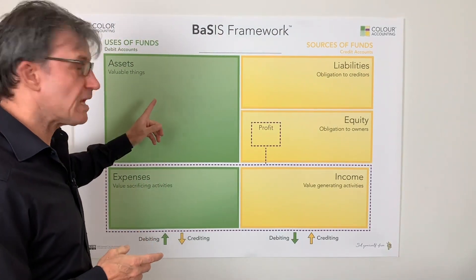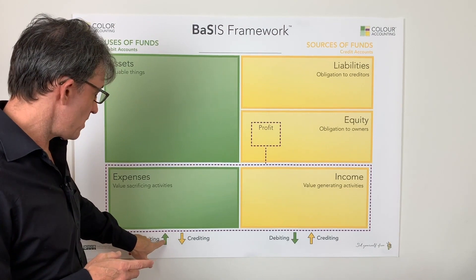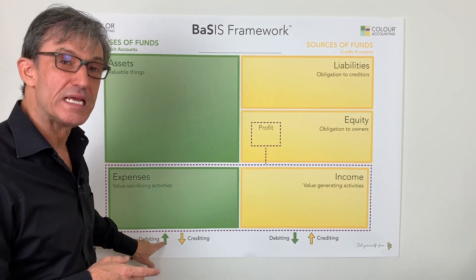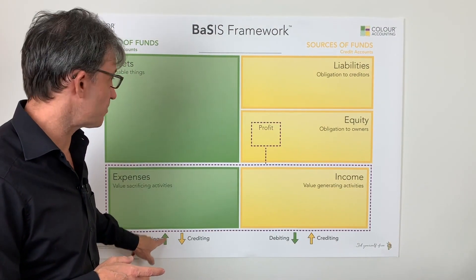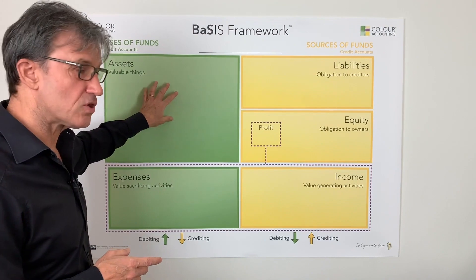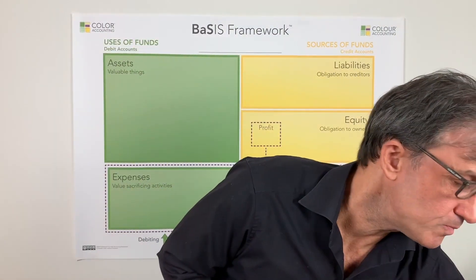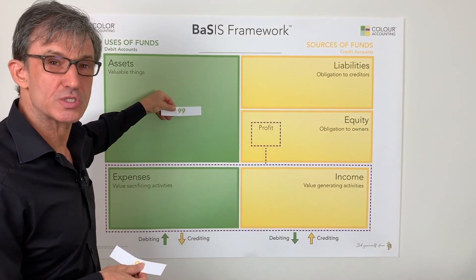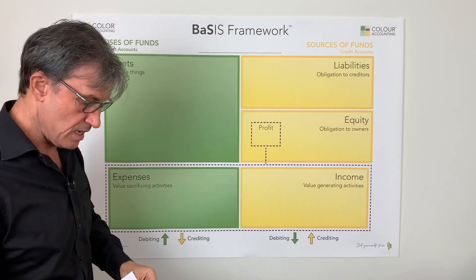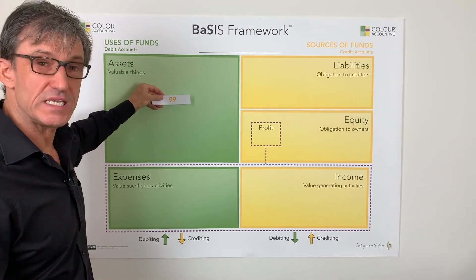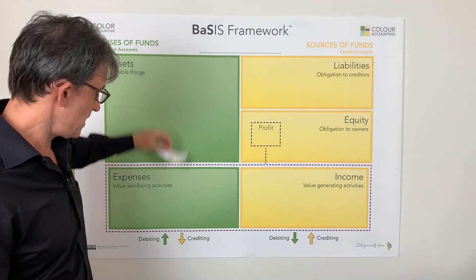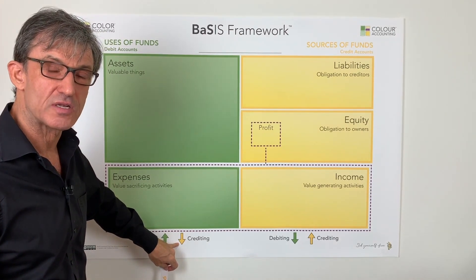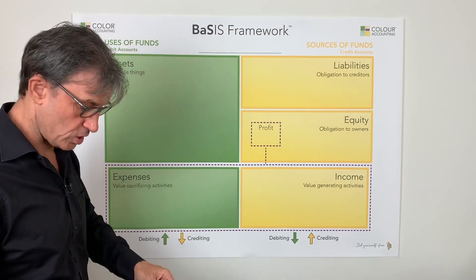We'll put numbers on this framework in a minute. If I put a green number on this side, it means I'm debiting a debit account, and that will increase the account because I'm putting green on the green side. But if I put a yellow number on the green side, it'll cause a decrease because I'm crediting a debit account. That's how debits and credits work.